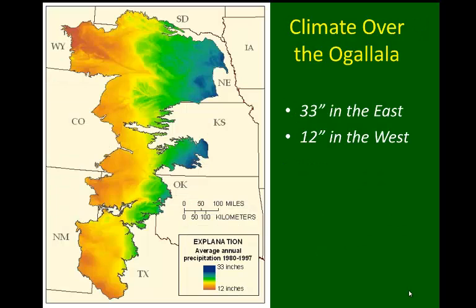The source of water to groundwater and aquifers is largely precipitation. This is the typical distribution of precipitation at the surface across the Ogallala Aquifer. The reddish and yellowish colors on the western side of this map show that there is very low precipitation in those areas.